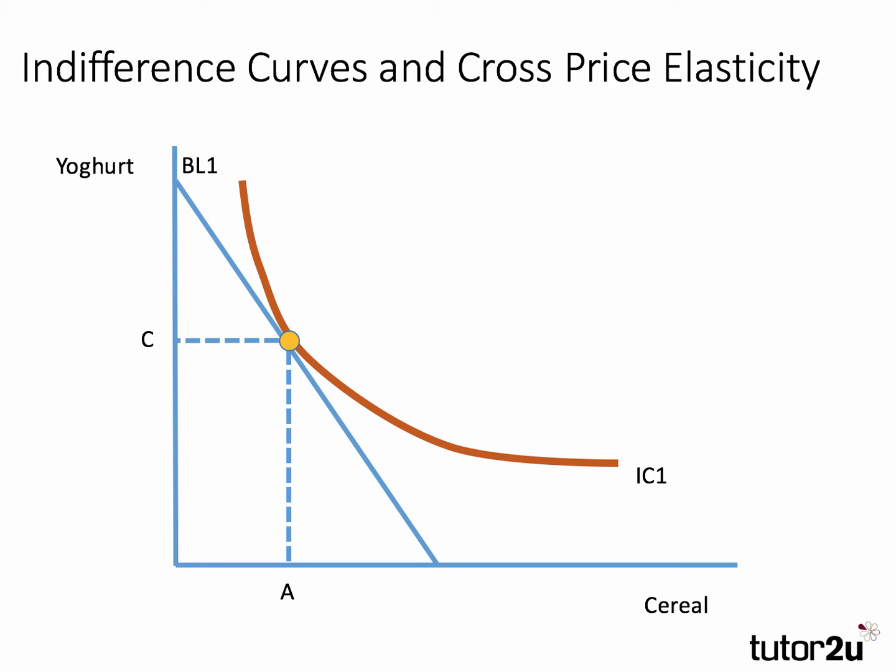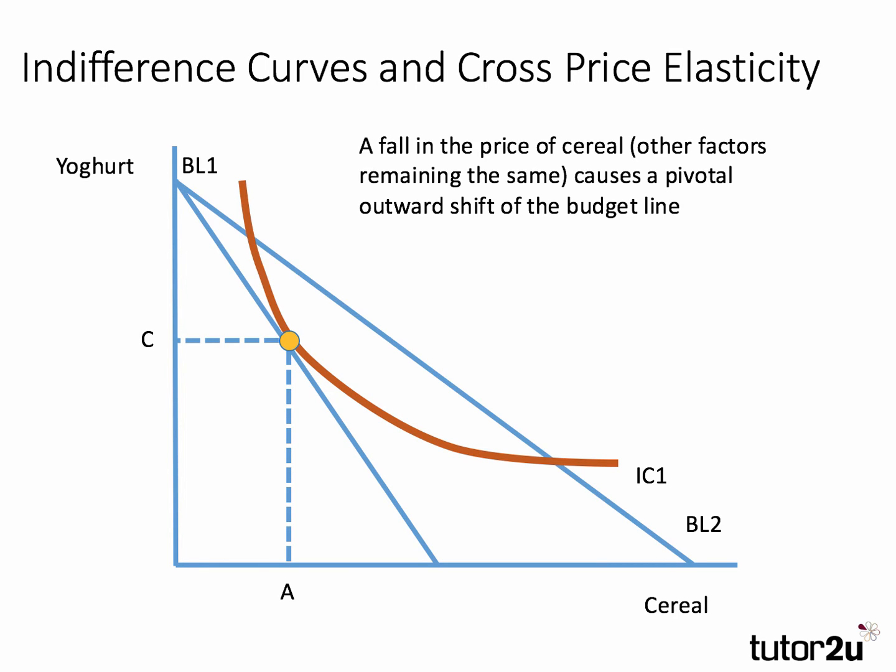Now let's make a change to the diagram. I have reduced the price of cereal — in fact I've pretty much halved it. You can see that the consumption possibility for cereal has doubled for a given income. We've kept the price of yogurt the same, so income and the price of yogurt remain constant — all other factors remain constant. We've just reduced the price of cereal, and this causes a pivotal outward shift of the budget line.